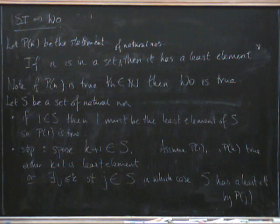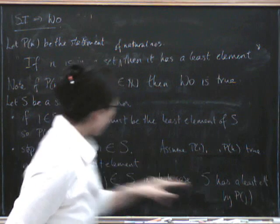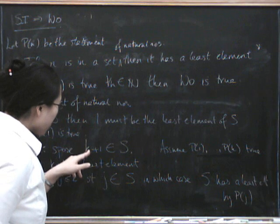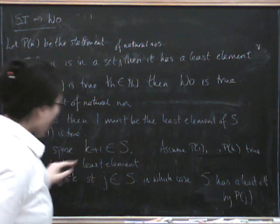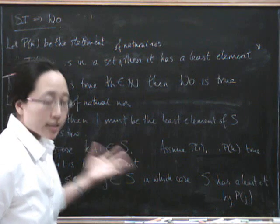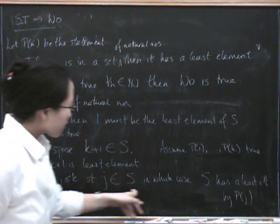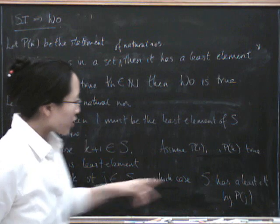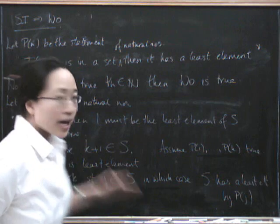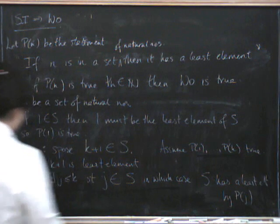So look at what we've done. We've assumed that P(1) up to P(k) are true, and we're trying to deduce that P(k+1) is true. Suppose that k+1 is in the set: either k+1 is the least element, in which case the set has a least element, or there's some j in the set, in which case S has a least element because P(j) is true. So either way, S has to have a least element, and we've deduced that P(k+1) is true.